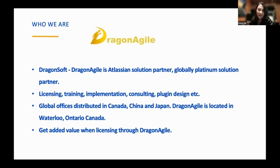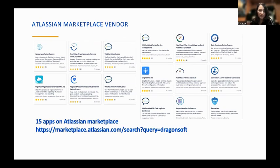Dragon Agile is an Atlassian Solution Partner globally. We provide licensing, training, implementation, consulting, and we can also provide app design. We have global offices in China, Canada, Japan, and Dragon Agile is located in Waterloo, Ontario, Canada. We are also an Atlassian marketplace vendor with 15 apps available on the marketplace. Feel free to take a look.